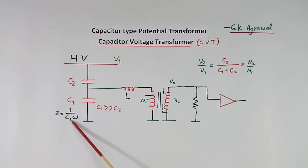So if C1 is more, this impedance will be low. When this impedance is low, we get low voltage here. This low voltage comes into this transformer.